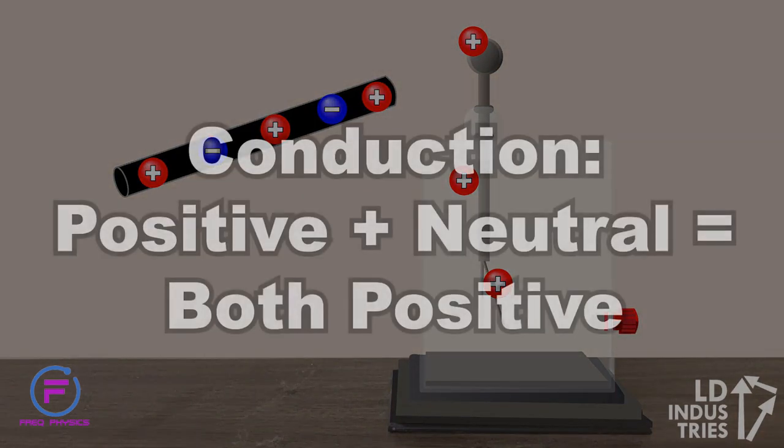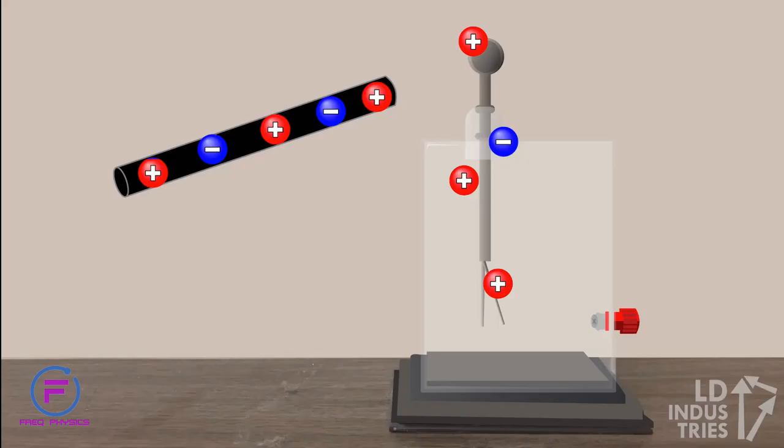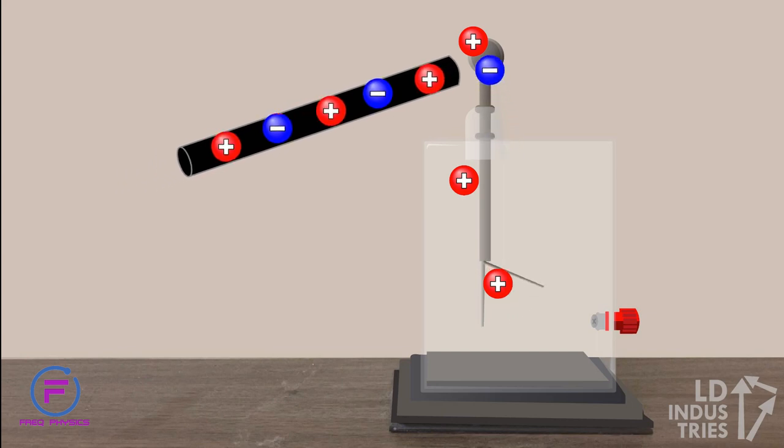Interestingly, if you take that now positive electroscope and move the positive rod close to, but do not touch, the electroscope, you can make the leaves move even further. What's going on here?